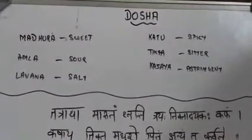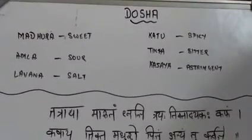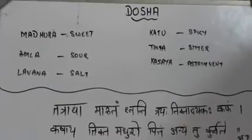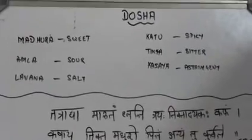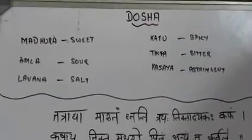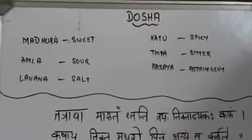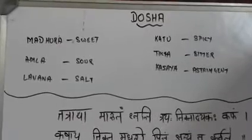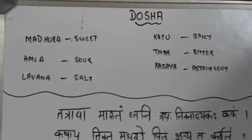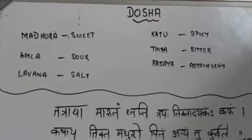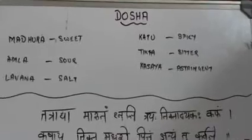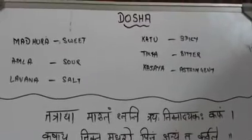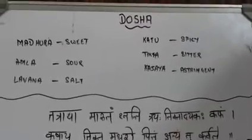Relationship of Dosha and Shadrasa. Rasa here refers to taste. According to Ayurvedic classics, there are six types of rasas or tastes: Madhura (sweet), Amla (sour), Lavana (salty), Katu (spicy), Tikta (bitter), and Kashaya (astringent).